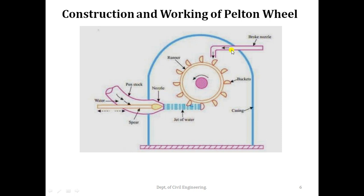The Pelton turbine is provided with a casing to prevent splashing of water and to discharge the water to the tail race. When the nozzle is completely closed by moving the spear forward, the amount of water striking the runner is reduced to zero. But due to inertia, the runner continues revolving for a long time. In order to bring the runner to rest in a short interval of time, a brake nozzle is provided. This brake nozzle directs a jet of water that hits the back of the vanes of the turbine — this jet is called the braking jet.